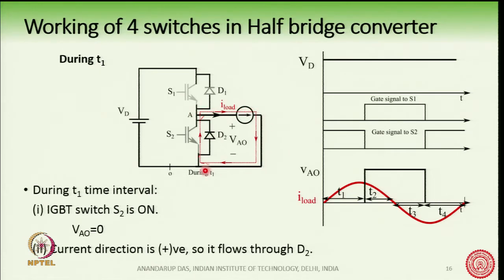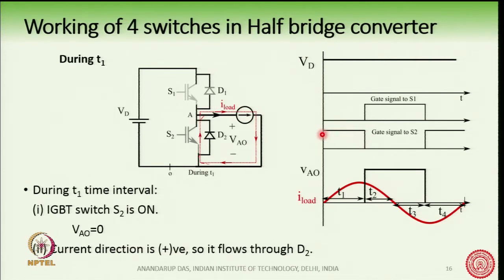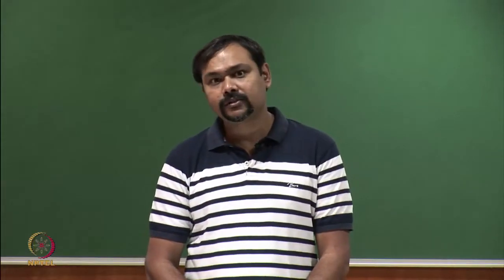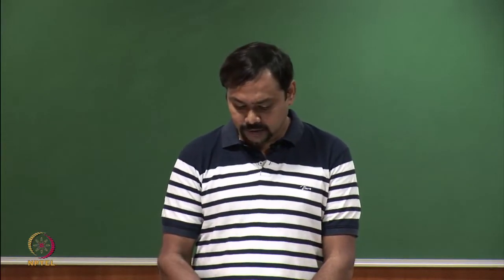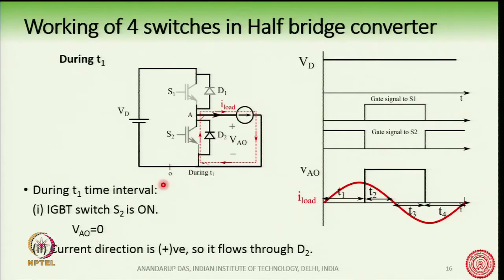The circuit is getting completed like this: D2, the load, and back. So we see that in spite of giving pulse to S2 during this time, the IGBT is not conducting. It is the diode D2 which is conducting, and the voltage between point A and O is 0 because, for an ideal diode, the voltage drop across the diode is 0. So basically point A and O are at the same potential.